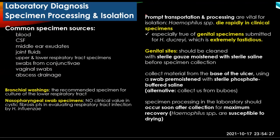For laboratory diagnosis, specimen processing, and isolation, the common sources include blood, CSF, middle ear exudates, joint fluids, upper and lower respiratory tract specimens, swabs from conjunctivae, vaginal swabs, and abscess drainage. For culture of the lower respiratory tract, bronchial washing is recommended.